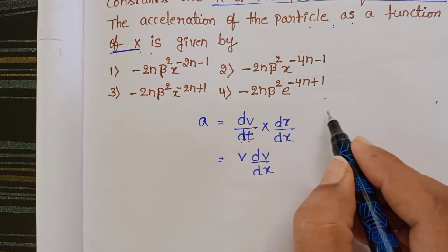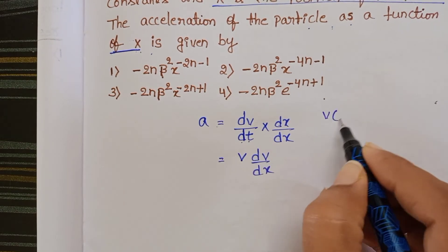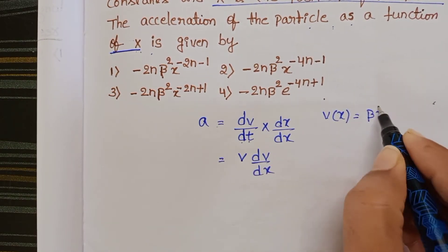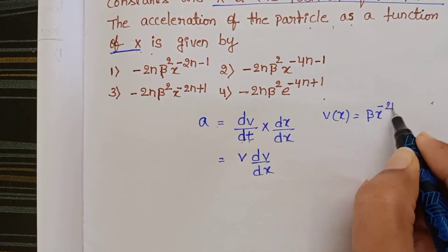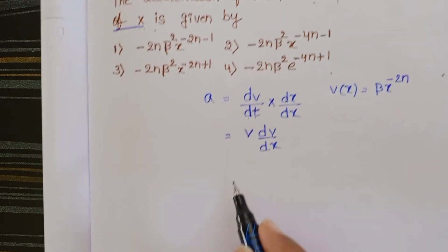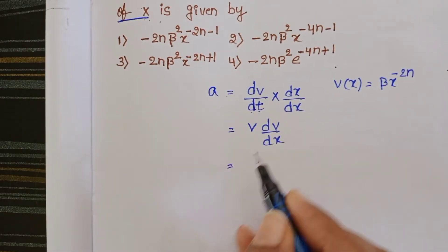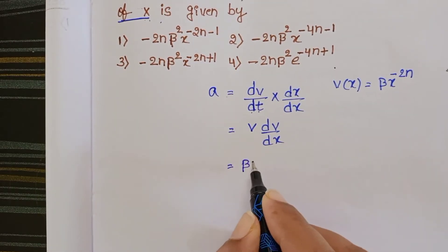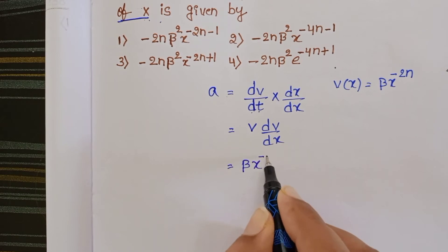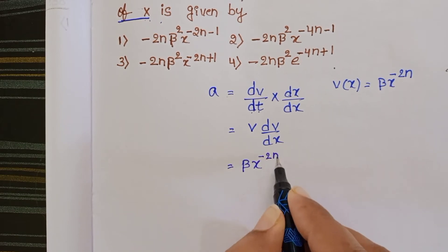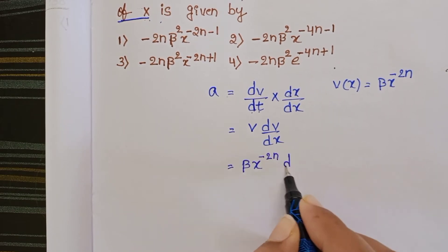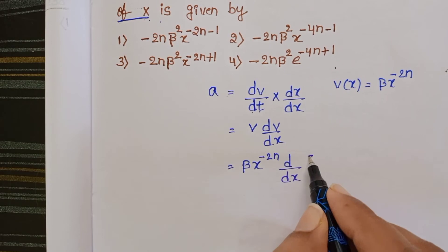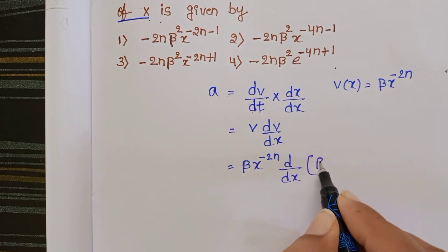The given velocity is v(x) = β·x^(-2n). So in place of v, we substitute β·x^(-2n), and we differentiate the given velocity with respect to x.